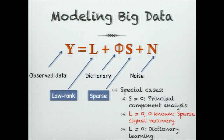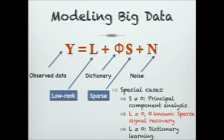Here is an encompassing model for big data used in many studies: your observed data Y can be written as the sum of three terms — a low rank matrix L capturing low rank structure, a product φS where φ is the dictionary and S is a sparse matrix, plus noise. This is encompassing because many well-known problems are special cases. If you neglect the sparse term, that is classical PCA. If you neglect the low rank term and φ is known, you are looking for a sparse representation — that is the sparse signal recovery problem, the focus of this talk. And if L is zero but you do not know φ or S, that is the dictionary learning problem.